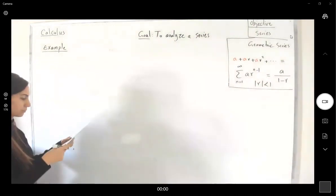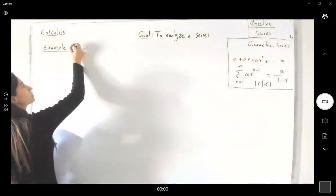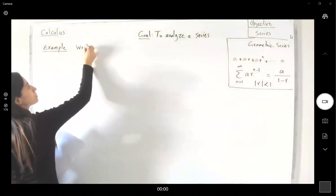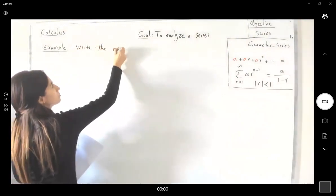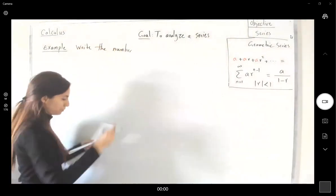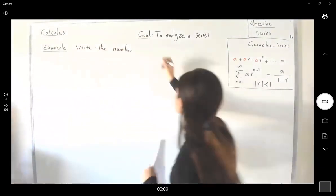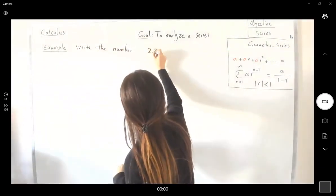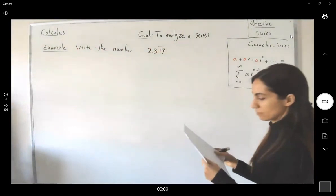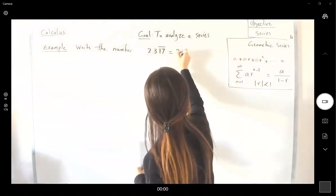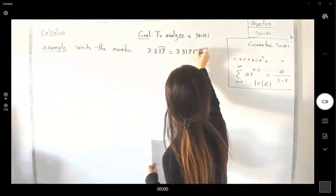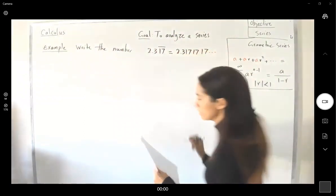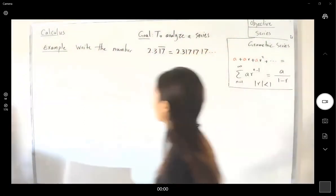An example says, write the number 2.3, 17 is repeated, which is 2.3 17 17 17, so 17 is repeated as a ratio of integers.